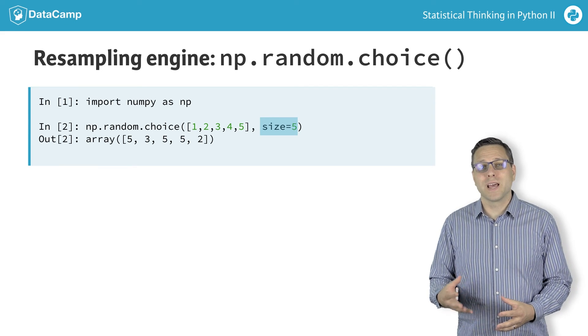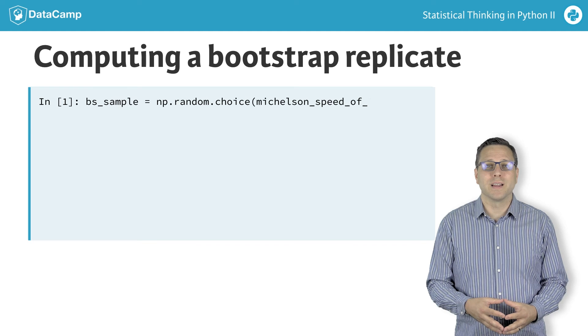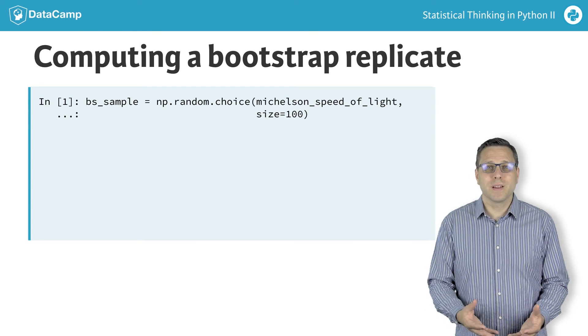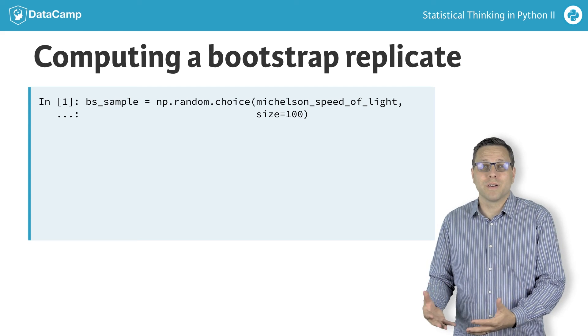Now we can draw 100 samples out of the Michelson speed of light data. This is a bootstrap sample since there were 100 data points and we are choosing 100 of them with replacement.